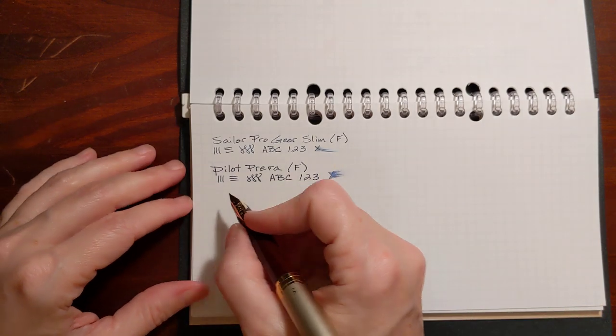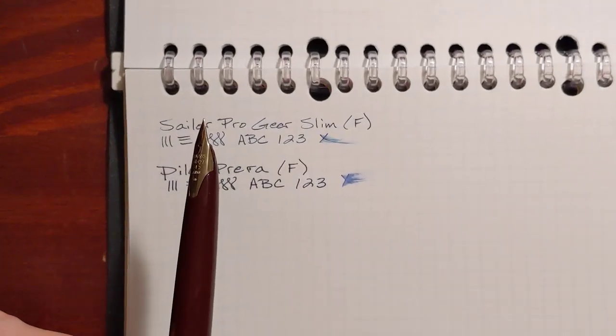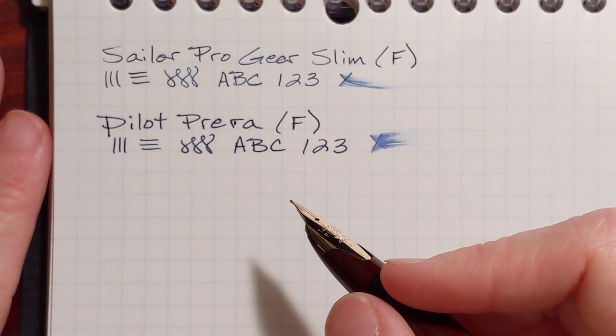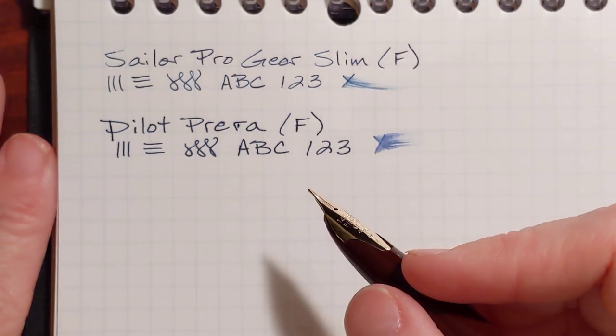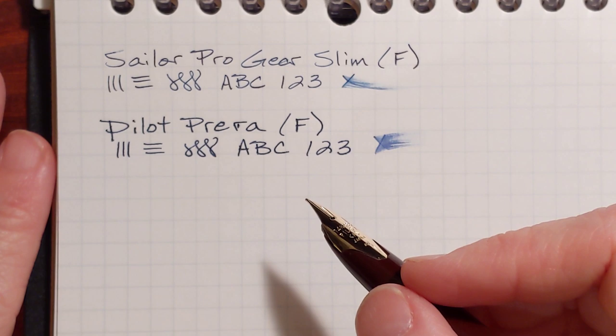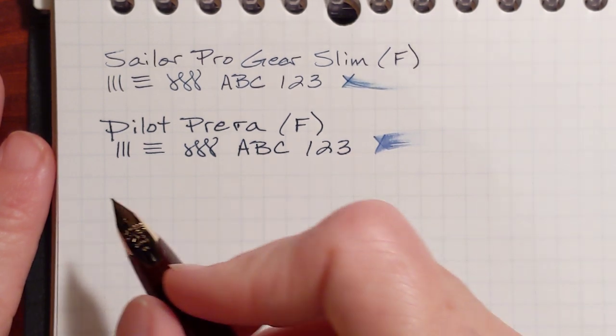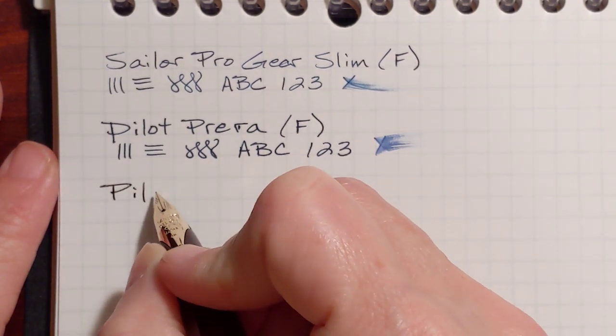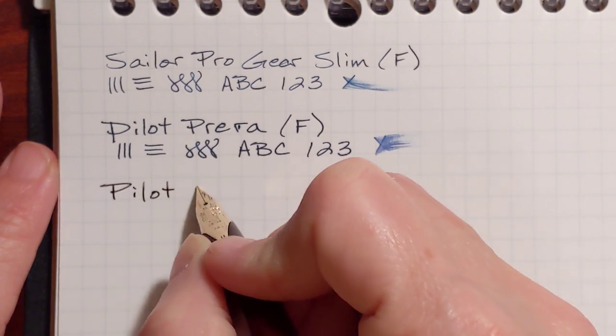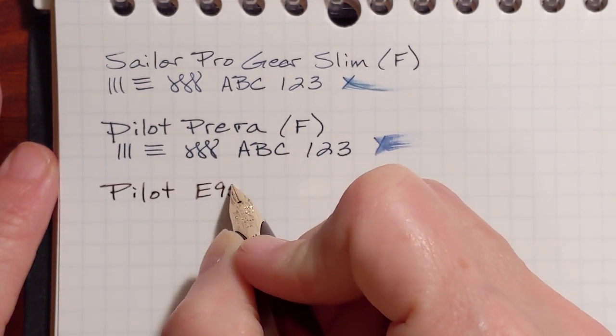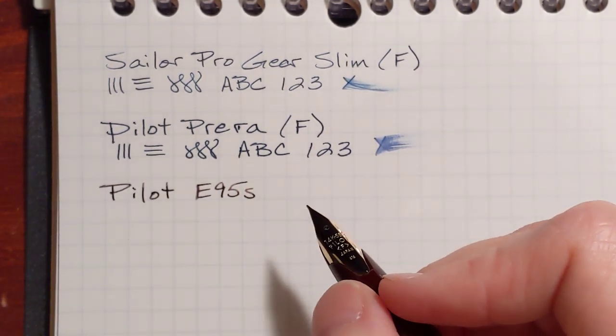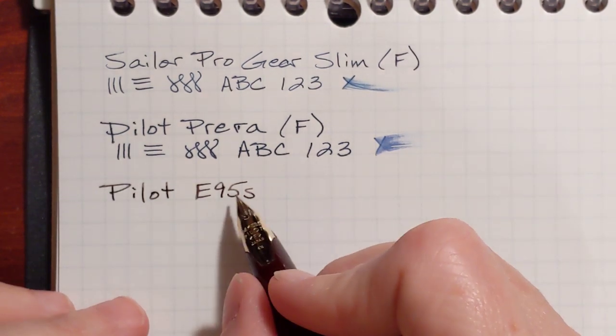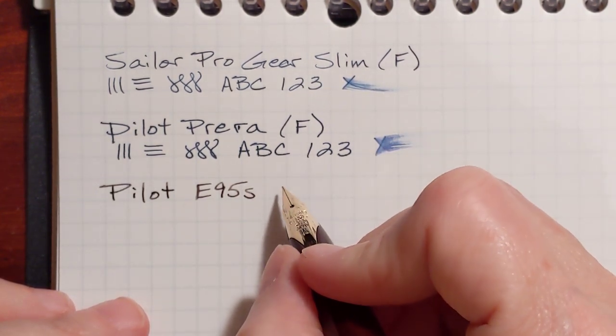I have this inked up with Graf von Faber-Castell Stone Gray. This is also a fine nib. Very smooth. And the Graf von Faber-Castell inks tend to run a little dry. So they just work really well in this very smooth nib.